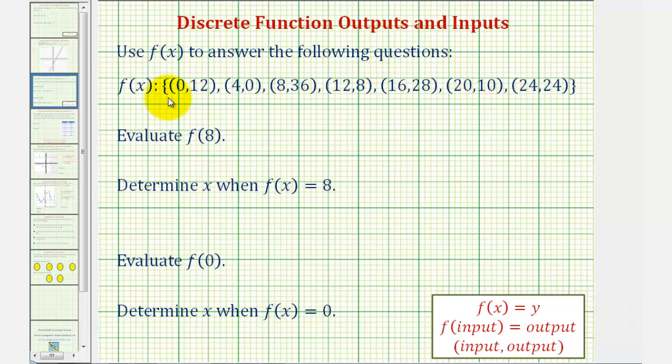We want to use f of x, which is given here as a list of ordered pairs, to answer the following questions. Our first two questions are evaluate f of 8, and then determine x when f of x equals 8. Notice how f of x is a list of ordered pairs, and therefore we can call f of x a discrete function.